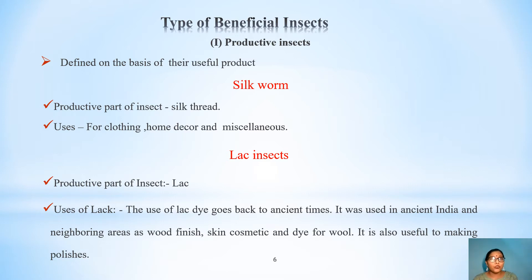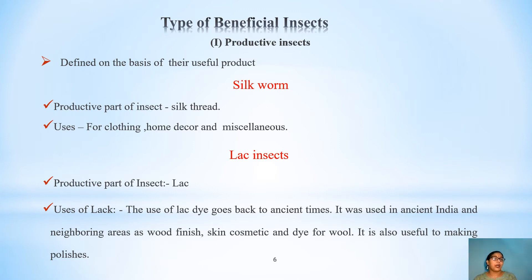Such insects are very useful to human beings because these are directly or indirectly related to human life. We can take a few examples of productive insects. First one is silkworm. The insect of silkworm belongs to order Lepidoptera. Silk is a most important part of the industrial area. The rearing of this insect is known as sericulture. The most important product of the silkworm is known as silk thread. The uses of silk are mostly clothing, textiles, home decor, and miscellaneous.